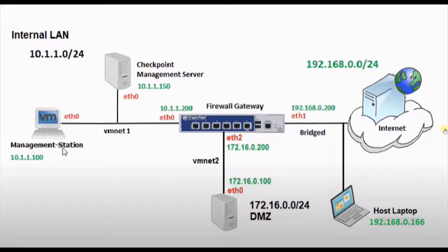You can define the IP scheme as per your requirement. If you have any doubt you are most welcome to comment in the comment box. On the LAN side on Ethernet 0 we will have one checkpoint management server and one management station to manage the policies. On VM net 2 adapter we will have one server which we will use as a web server. In a future lab on Active Directory we will connect one AD server on the internal LAN side connected to VM network adapter 1.